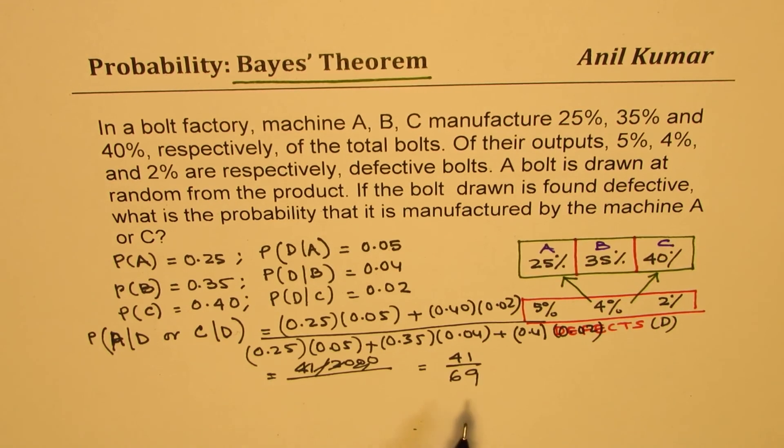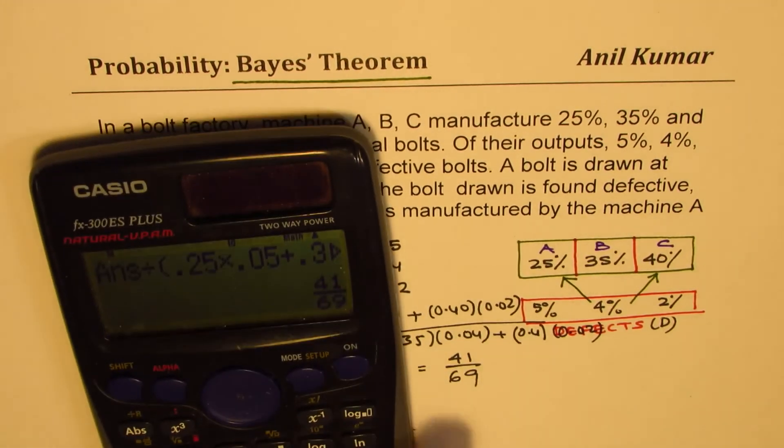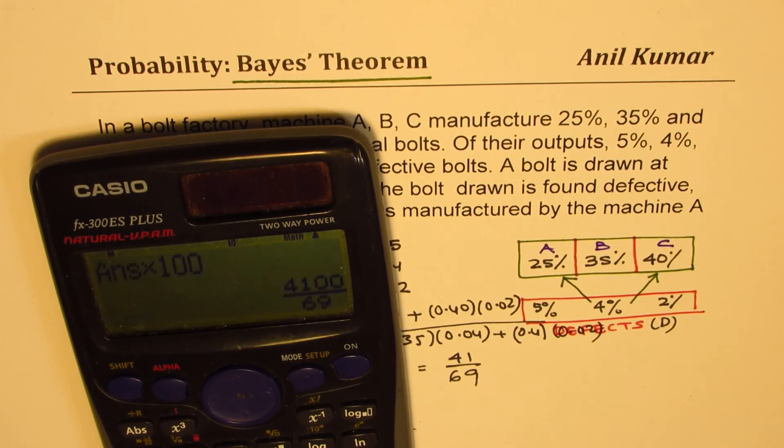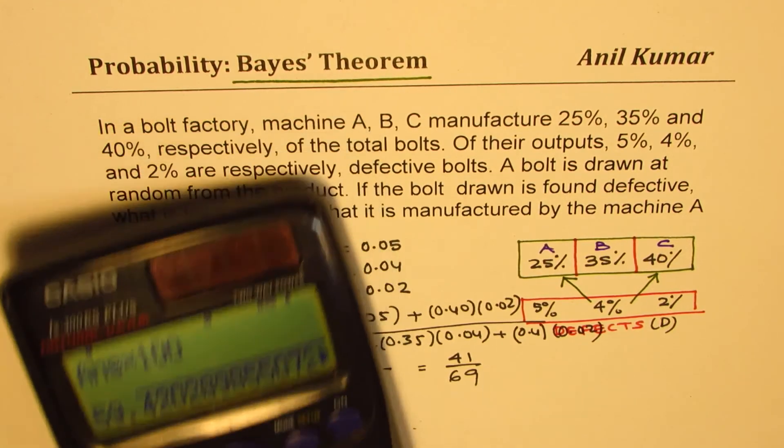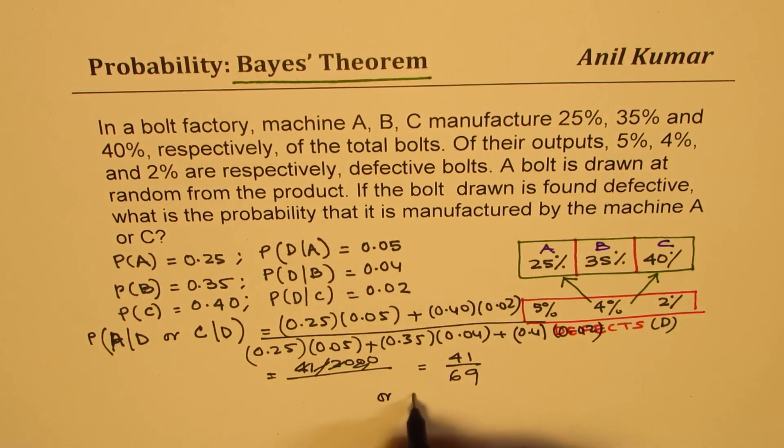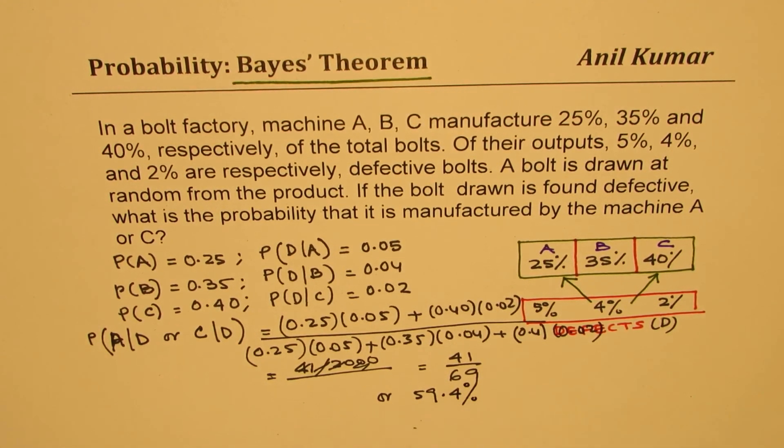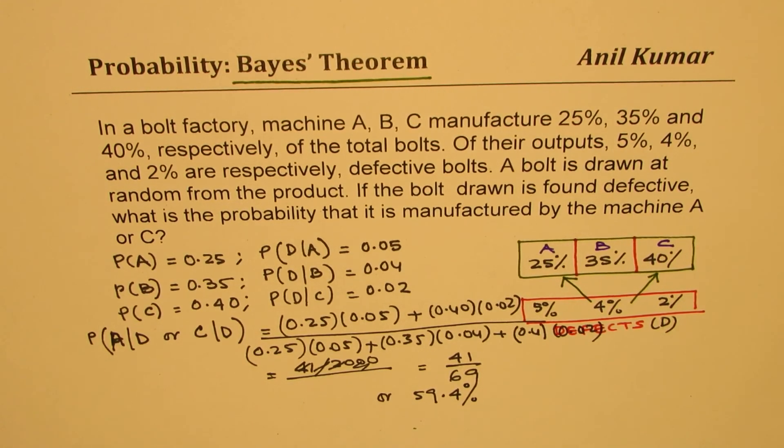The required probability is 41 over 69. If you want to write it in percent, multiply by 100 and write the decimal value of 59.4%. So once you understand which particular formula is to be applied, it is very simple. Whenever you're trying to find the source of what you've picked, Bayes' theorem is probably the most probable case to take. I hope that helps. Feel free to share your comments and your views. If you like and subscribe to my videos, that'd be great. Thanks for watching and all the best.